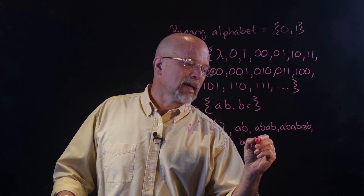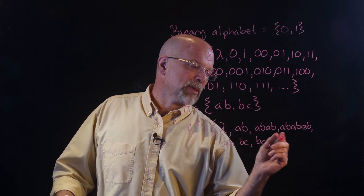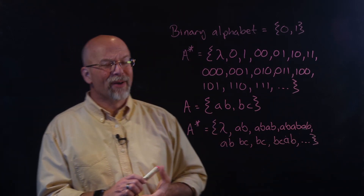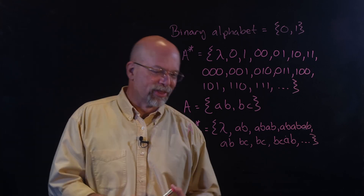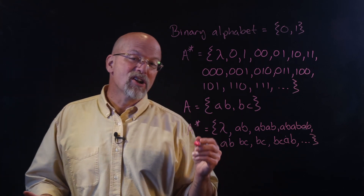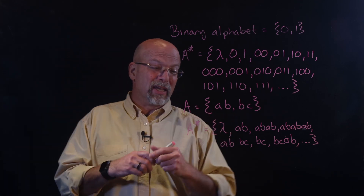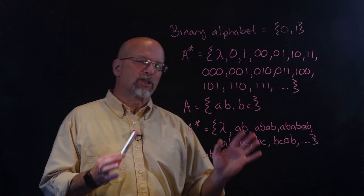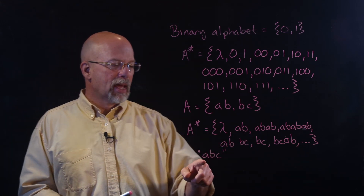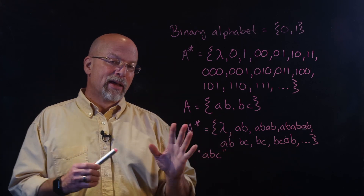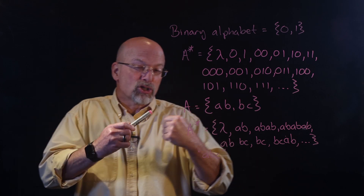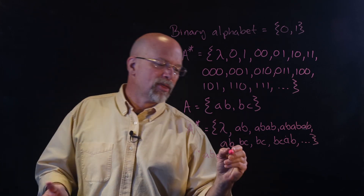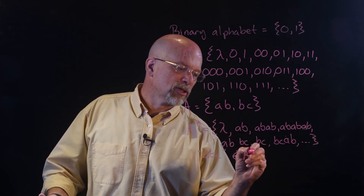And how about 'BC,' 'BCBC,' 'BCAB,' and so forth. We could be here a very long time. But what are some elements that look like they should be included but aren't? For example, the string 'ABC' — that looks like it should be included: 'AB' is in the set, 'BC' is in the set. But this element is not a member of A-star.